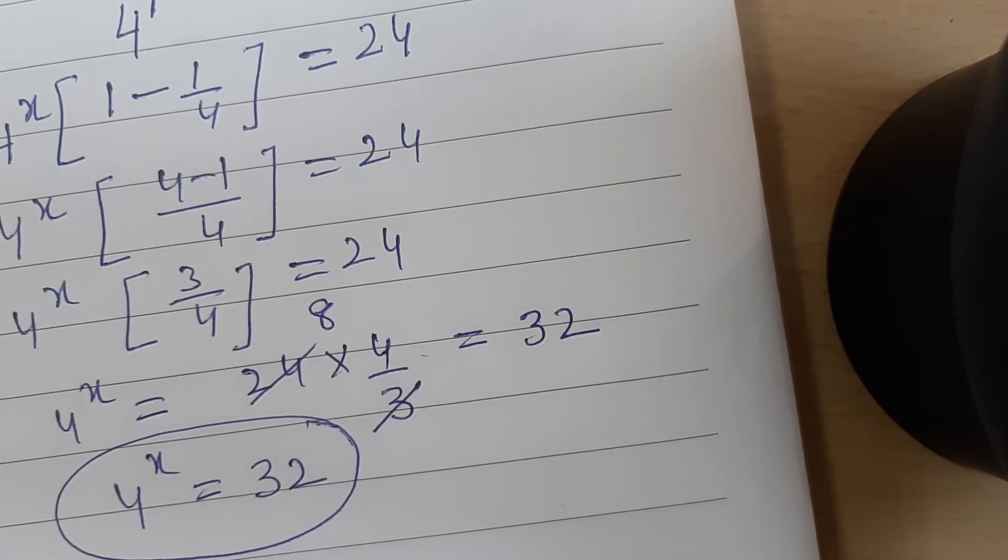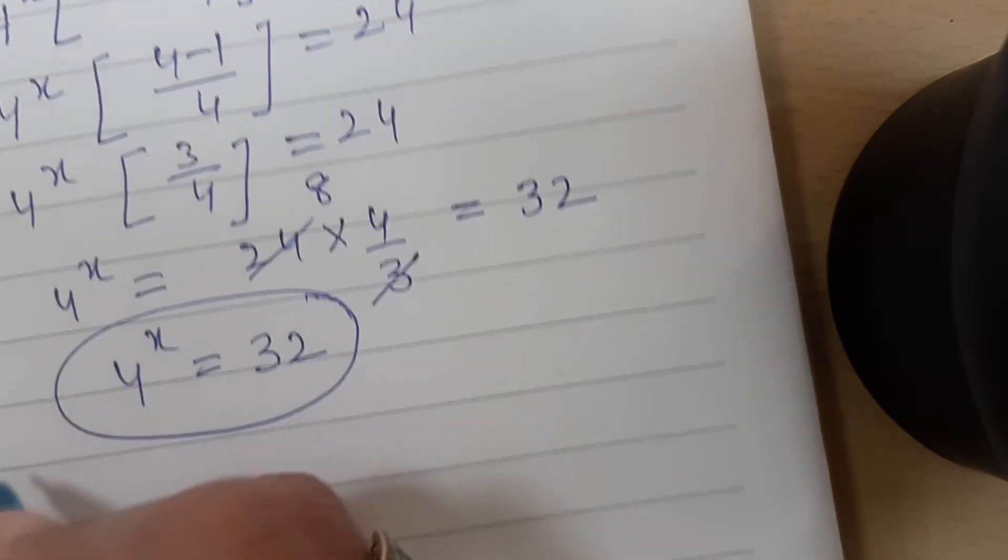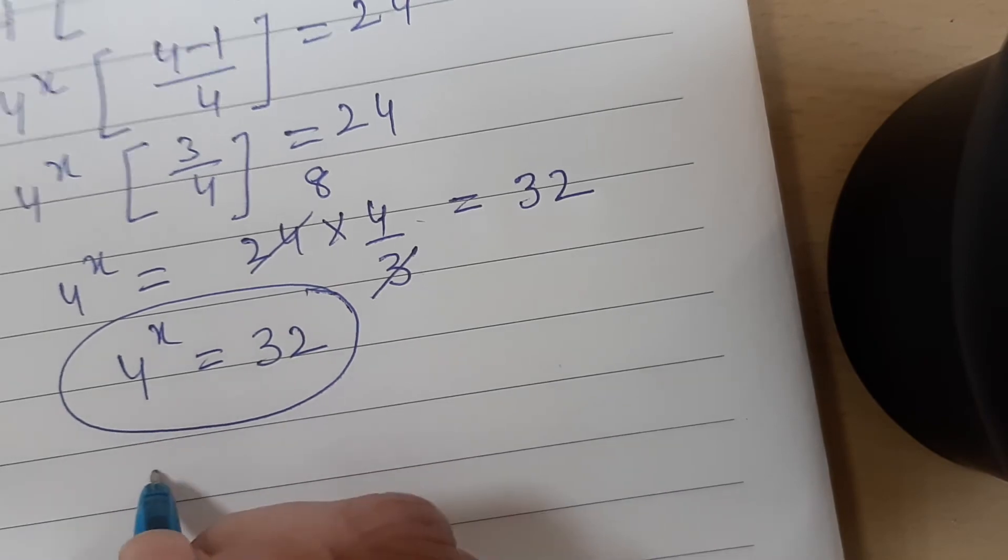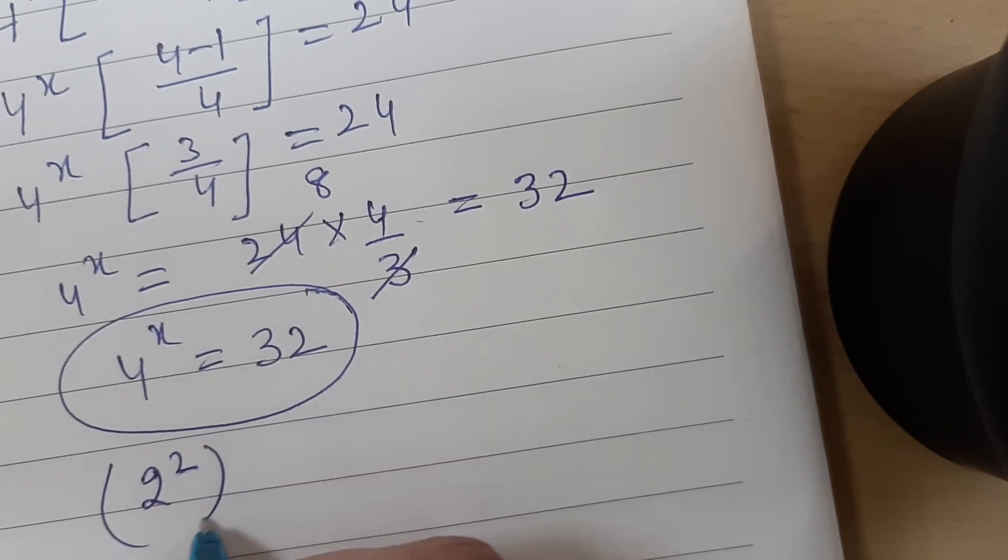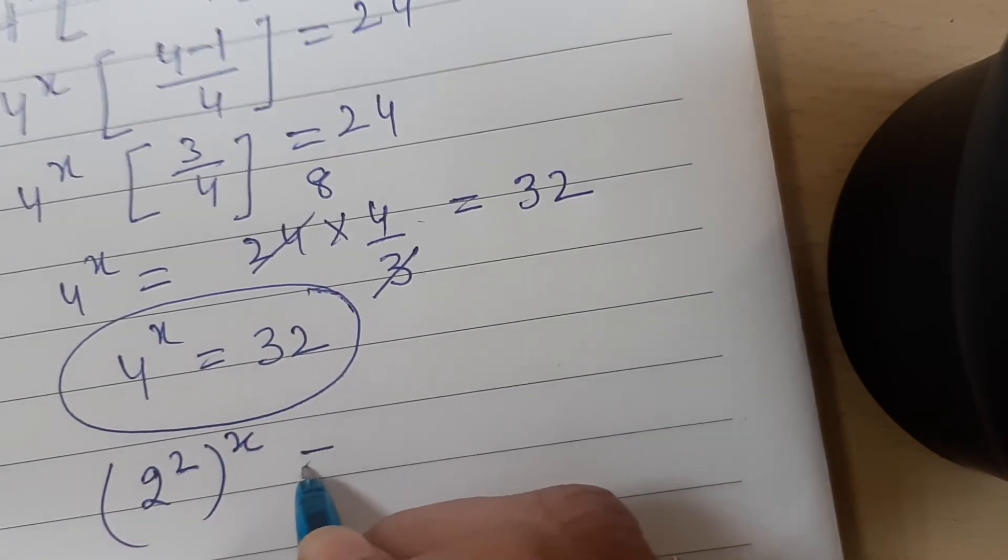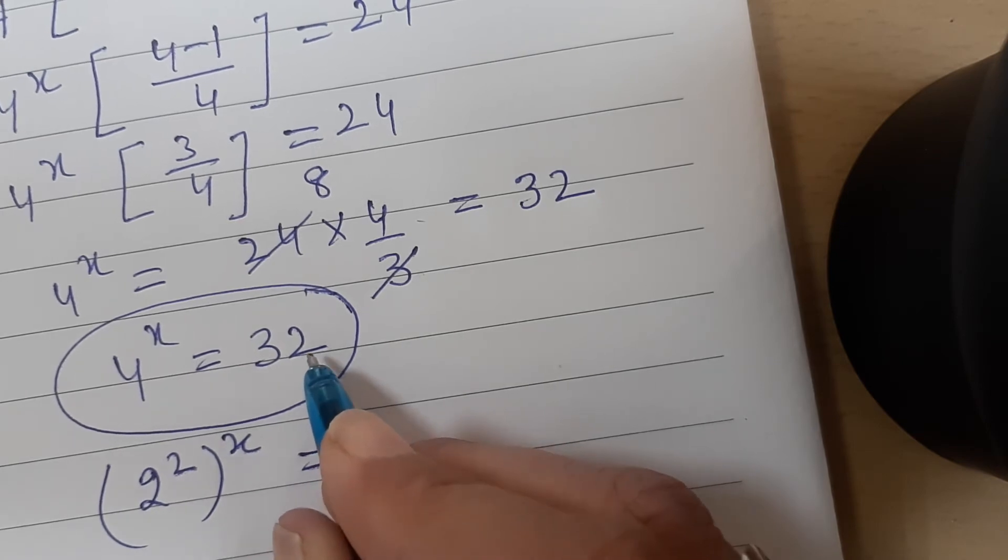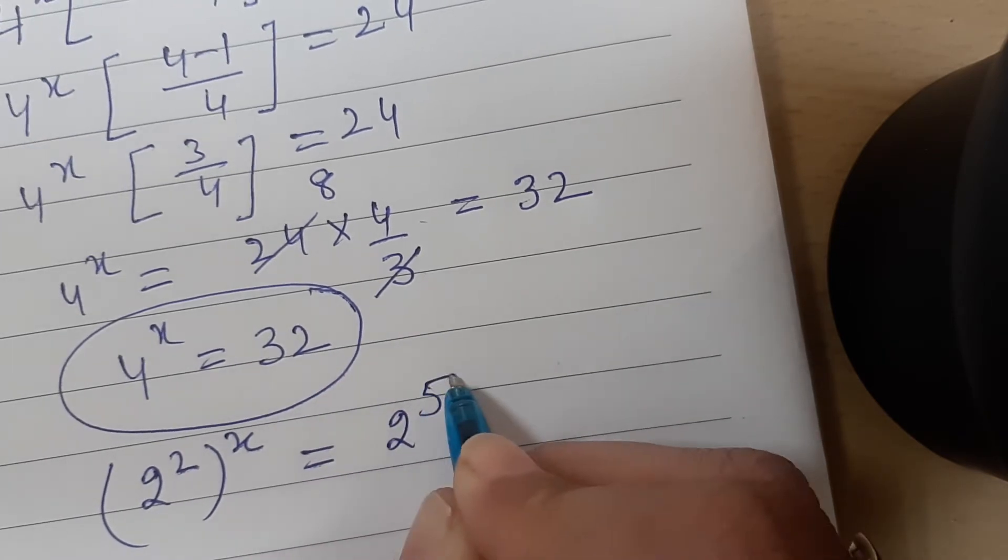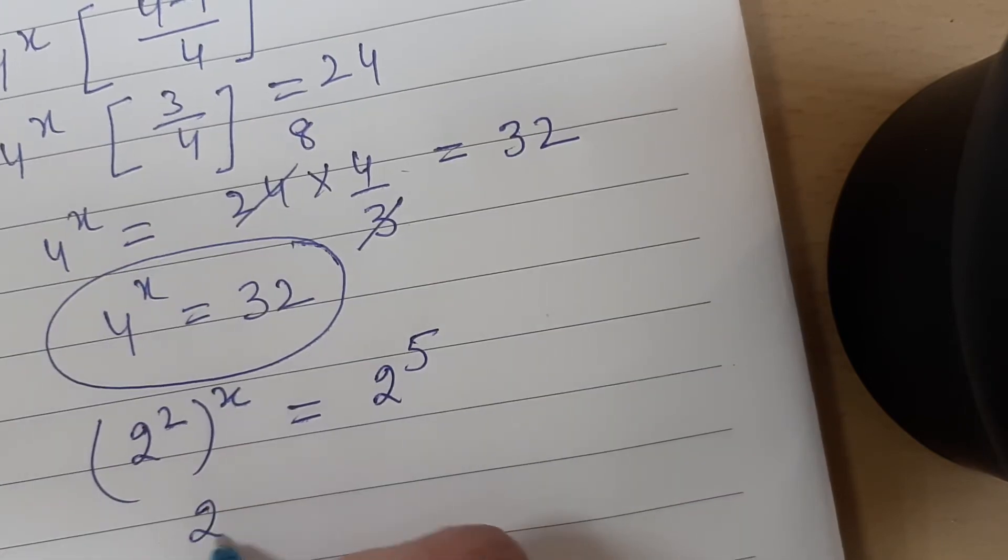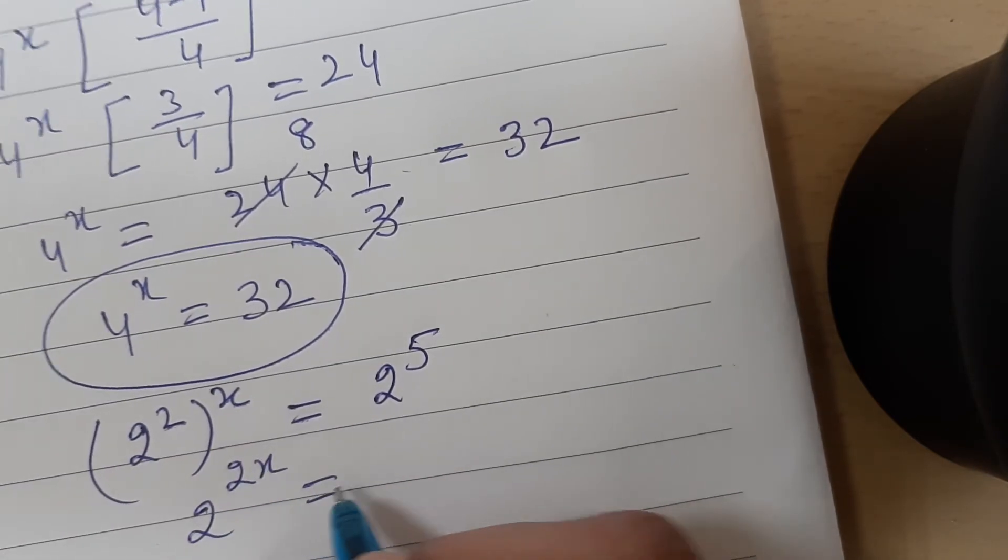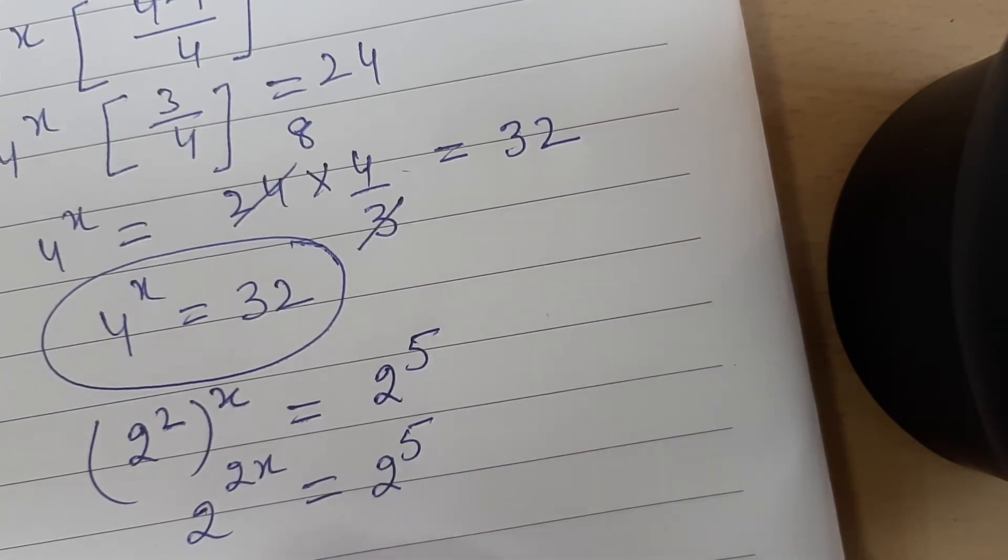Now we have to find the value of x. We can write 4 as 2 squared. It is raised to the power x and we can write 32 as 2 raised to the power 5. Simplify this. So 2 raised to the power 2x is equal to 2 raised to the power 5.